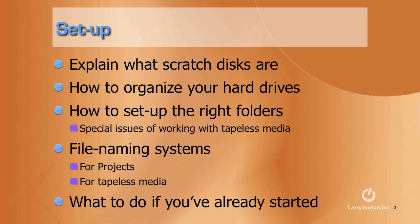We're going to start with setup. I'll begin by explaining what scratch disks are, how to organize your hard drives, and how to set up the right folders — including some special issues that arise as we shift from tape to tapeless media. We'll talk about file naming systems: how to name projects and project files. Tapeless media itself requires a special naming convention that we'll show you how to use inside Final Cut. And because many people don't set their systems up properly to begin with, or are in the middle of a project having problems, I'll show you what you can do to optimize and get things working better.